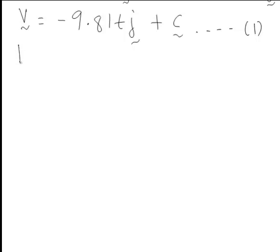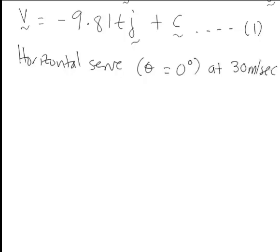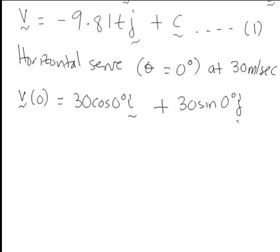Because we were told in this problem that we're looking at a horizontal serve initially, which means if we take the angle θ relative to the horizontal that's 0 degrees. We were told this was at 30 meters per second, and that means the initial velocity v0 is going to be 30 times cos 0 degrees i plus 30 sin 0 degrees times j. In this case because cos 0 is 1 and sin 0 is 0 that just simplifies to give us v0 equal to 30i which I'll call equation 2.